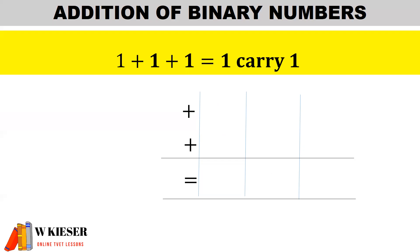In unusual circumstances we may have 1 plus 1 plus 1 inside a column, and therefore the answer would be 1 carry 1. For example, if we have 1 plus 1 plus 1 in our right-hand column, the answer is 1 carry 1 to the next column. Once again, the remaining columns have imaginary zeros, so according to the law 1 plus 0 equals 1.